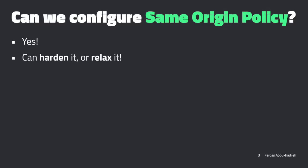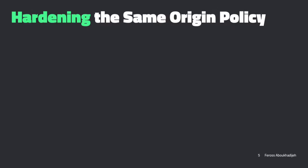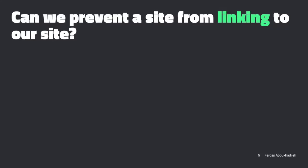Now let's talk about ways to configure the same-origin policy. We might want to harden it in certain situations and relax it in others. The defaults are: a site can link to another site, a site can embed another site but can't modify an embedded site, a site can submit forms to another site, and it can embed images and scripts from another site but can't read data from that site. Is there a way for a site to say it doesn't want any of this - to firewall itself off from everybody else?